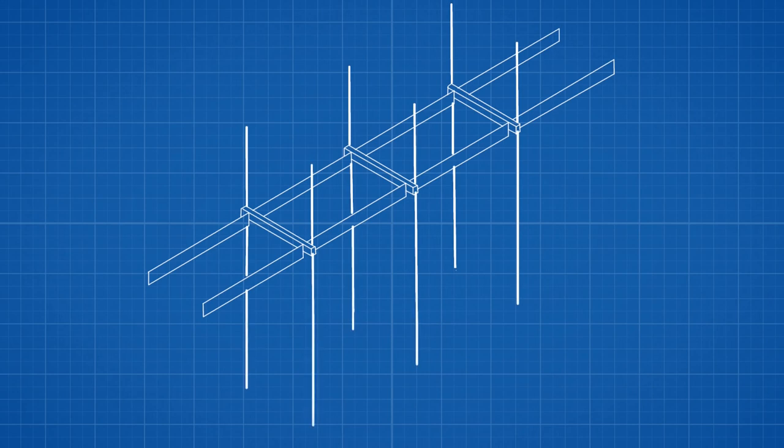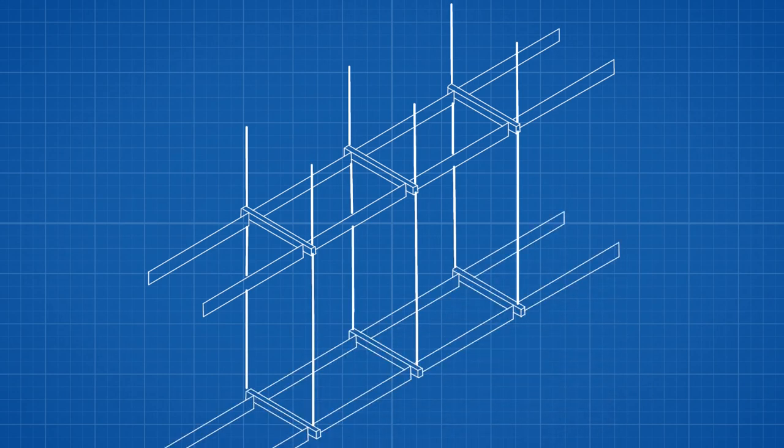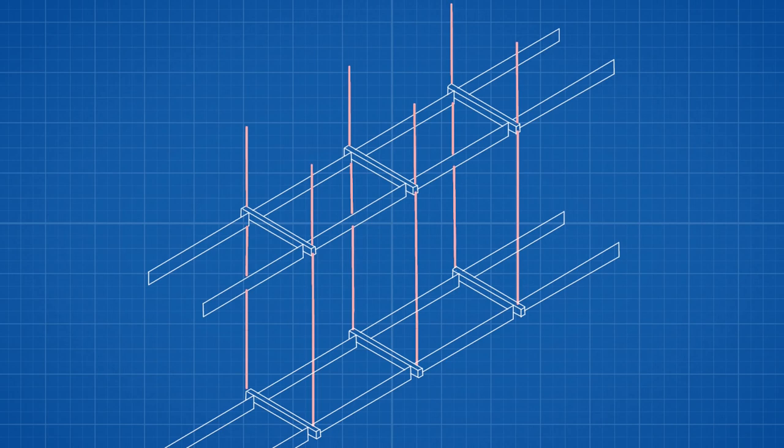Now the original design intended that the rod would be continuous through the fourth floor walkway to the second floor walkway. Under this arrangement, each box beam would separately transfer its load directly into the hanger rods and onto the atrium roof. This setup necessitated threads along the whole length of the rod.